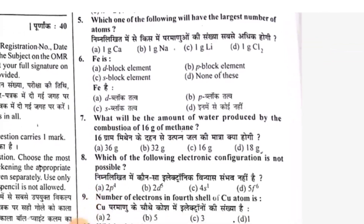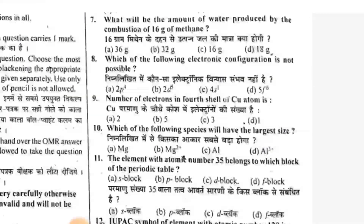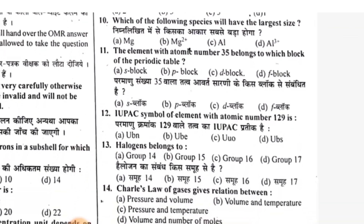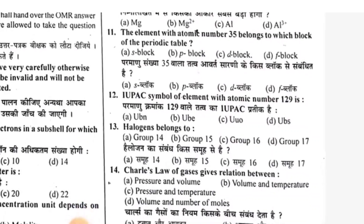Question 6 answer is C — A is a D-block element. Question 7 answer is A. 36 grams, answer is B. Question 9 answer is D. Question 10 answer is D. Question 11 answer is B. Question 12: the answer is UBE — if the atomic number is 129, then UBE.